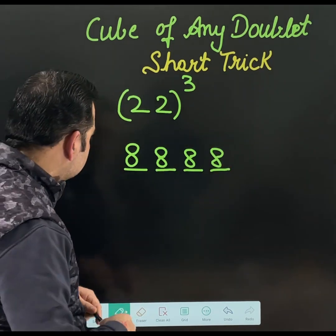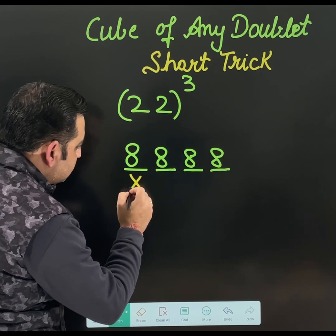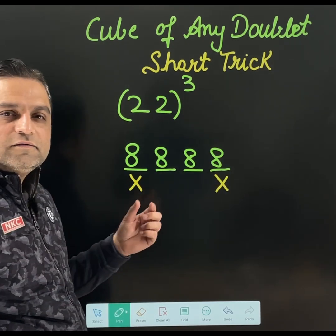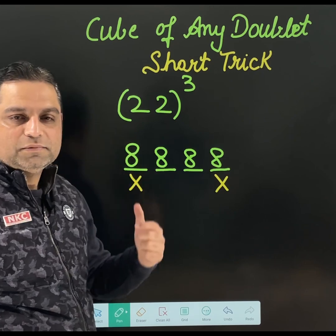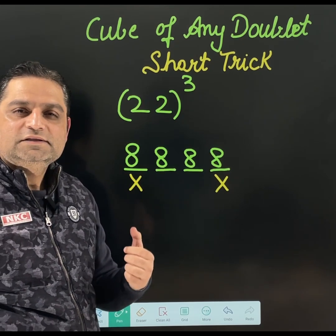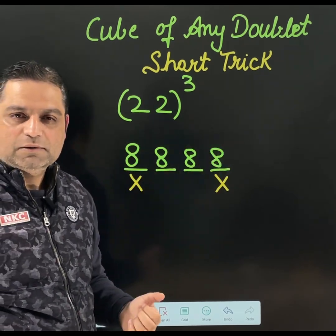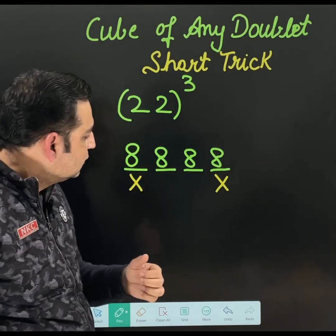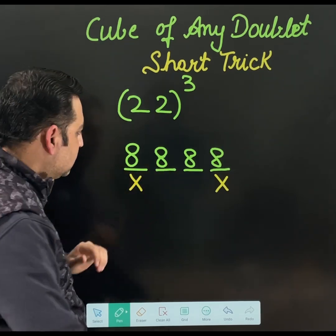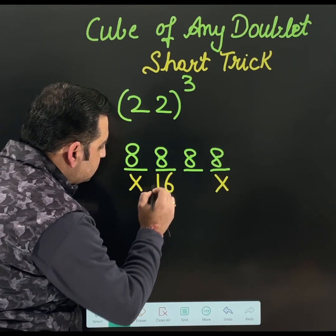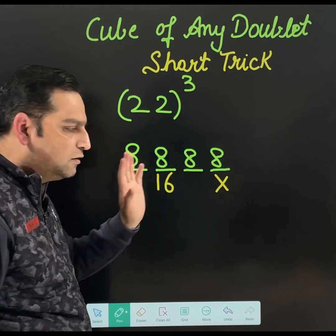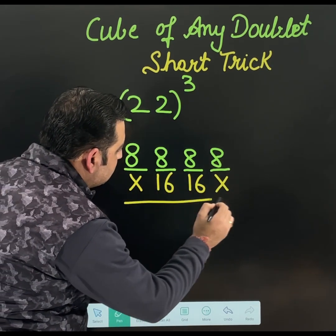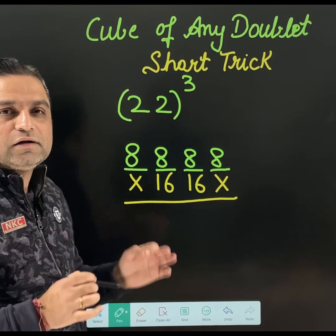And then leave this space, leave this space. We will just focus on the middle 2 numbers. Just do double of them. Double means multiplying by 2. When 8 is multiplied by 2, you will get 16. When this 8 is multiplied by 2, you will get 16. And we just need to add now.